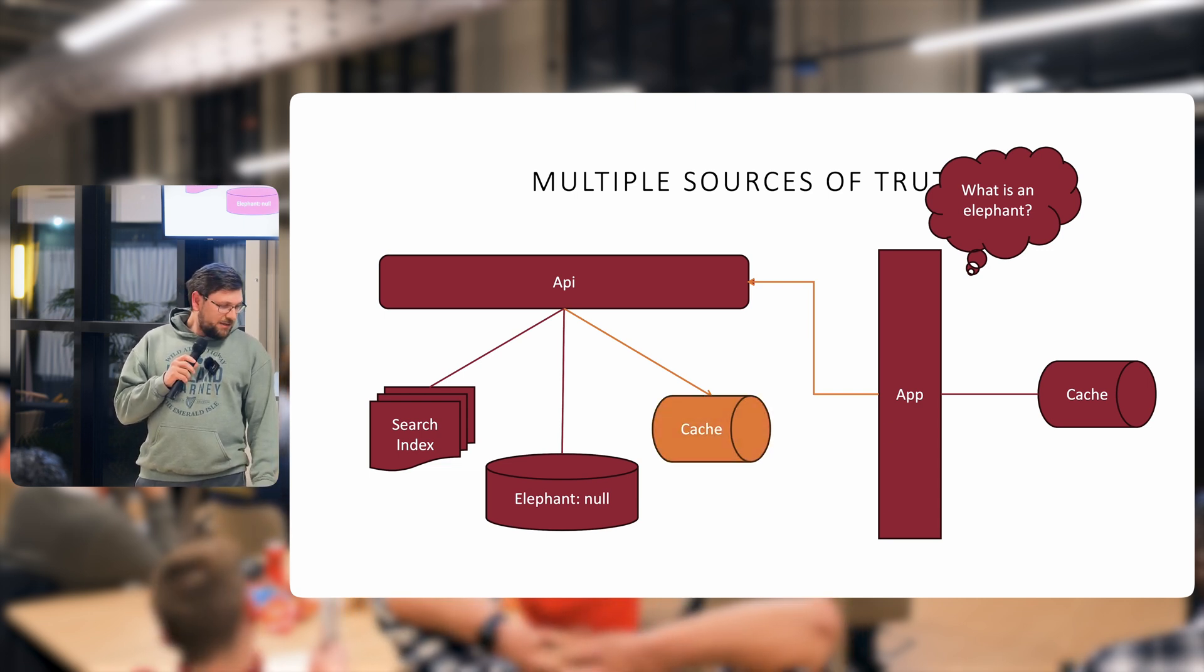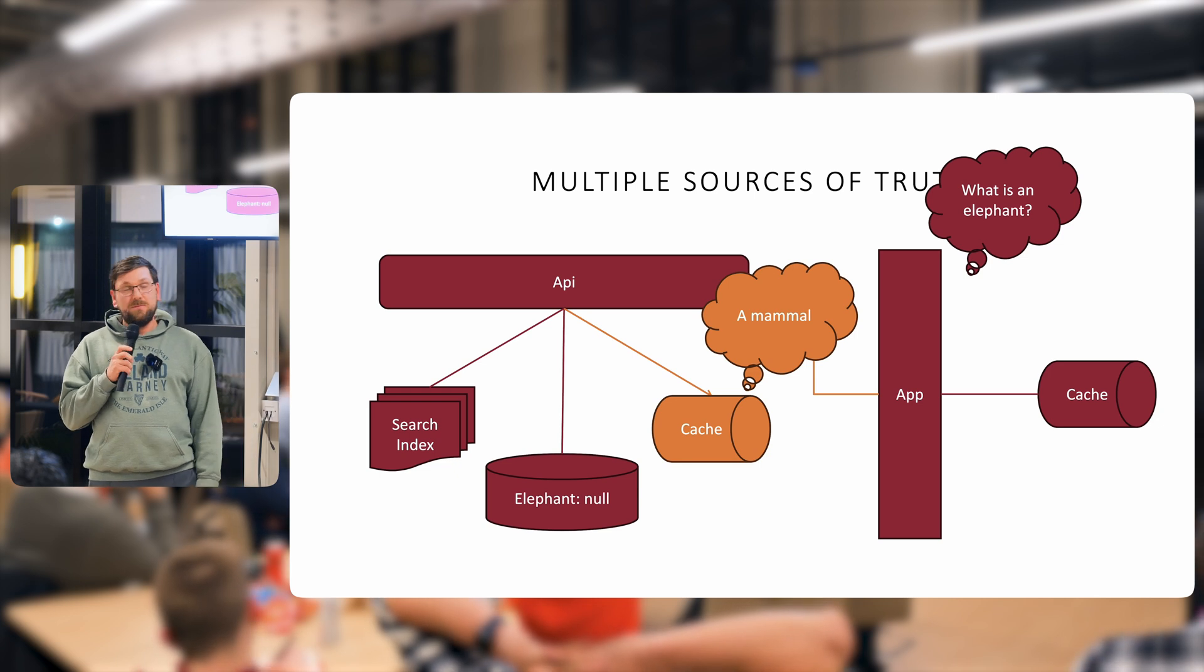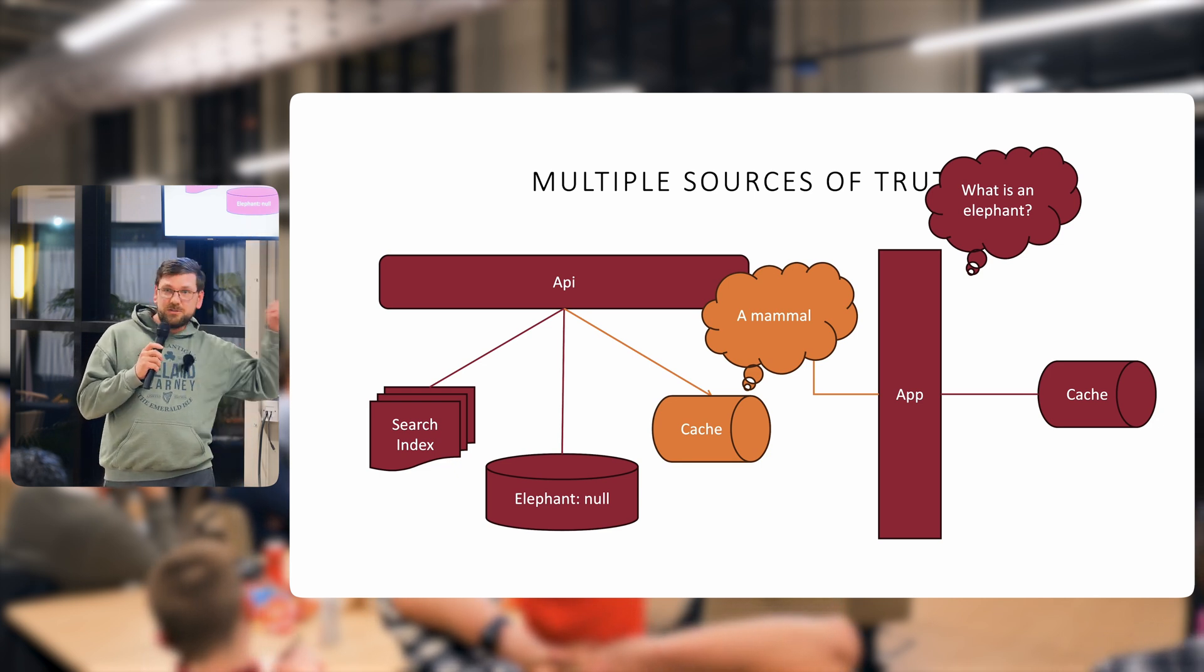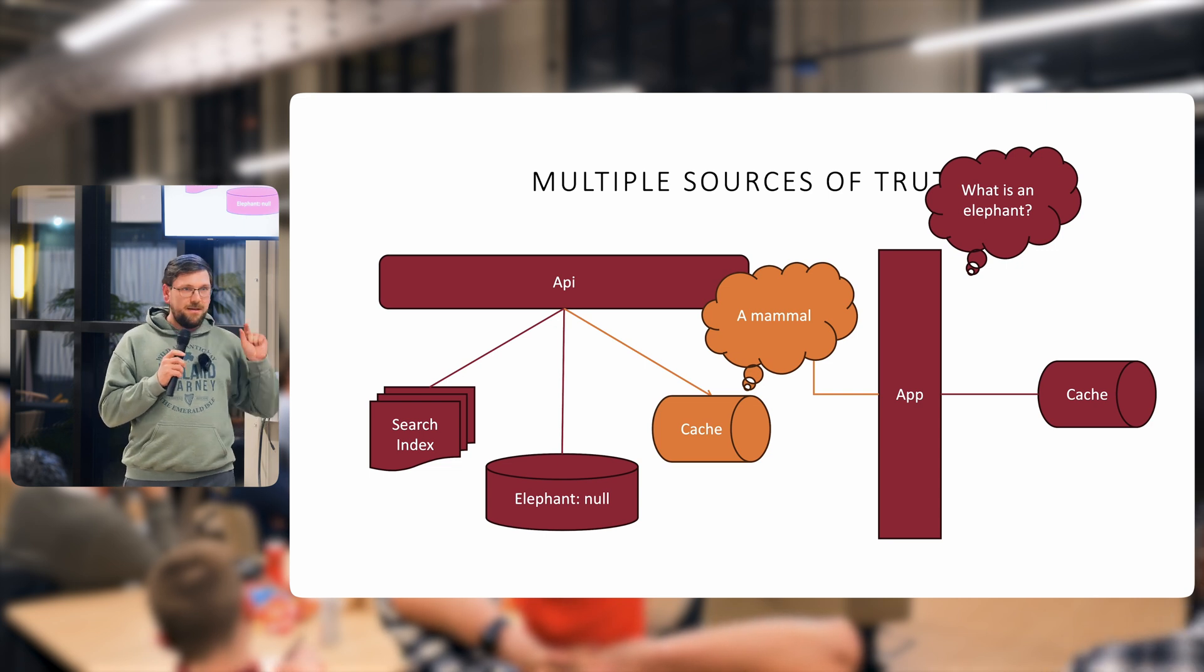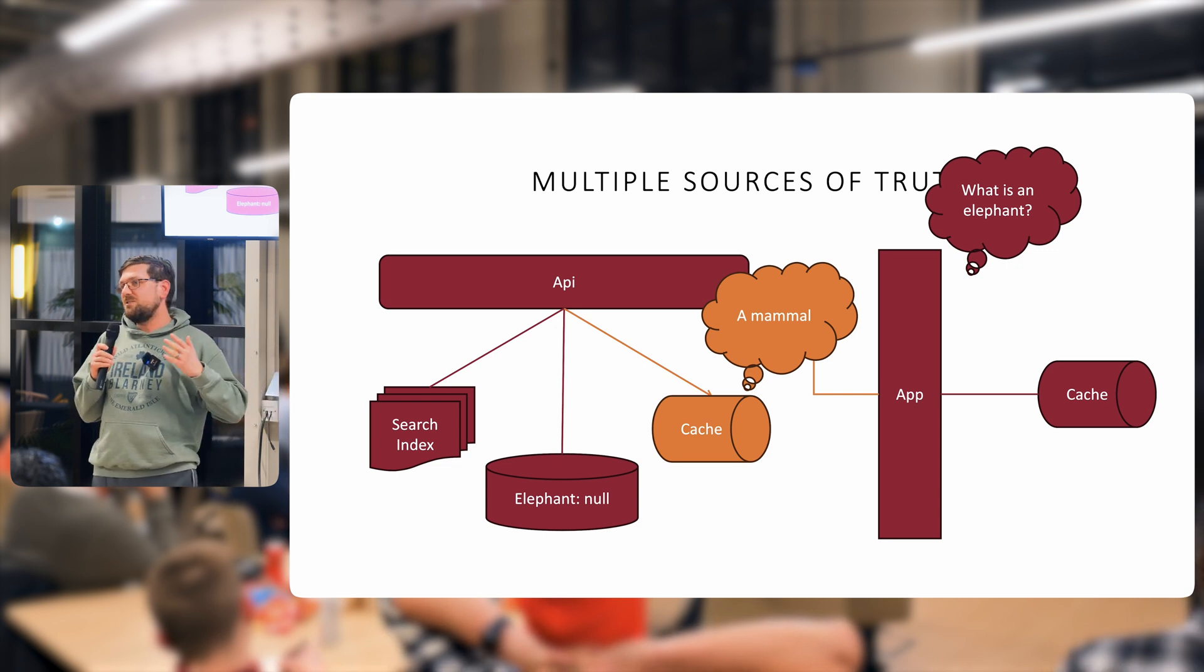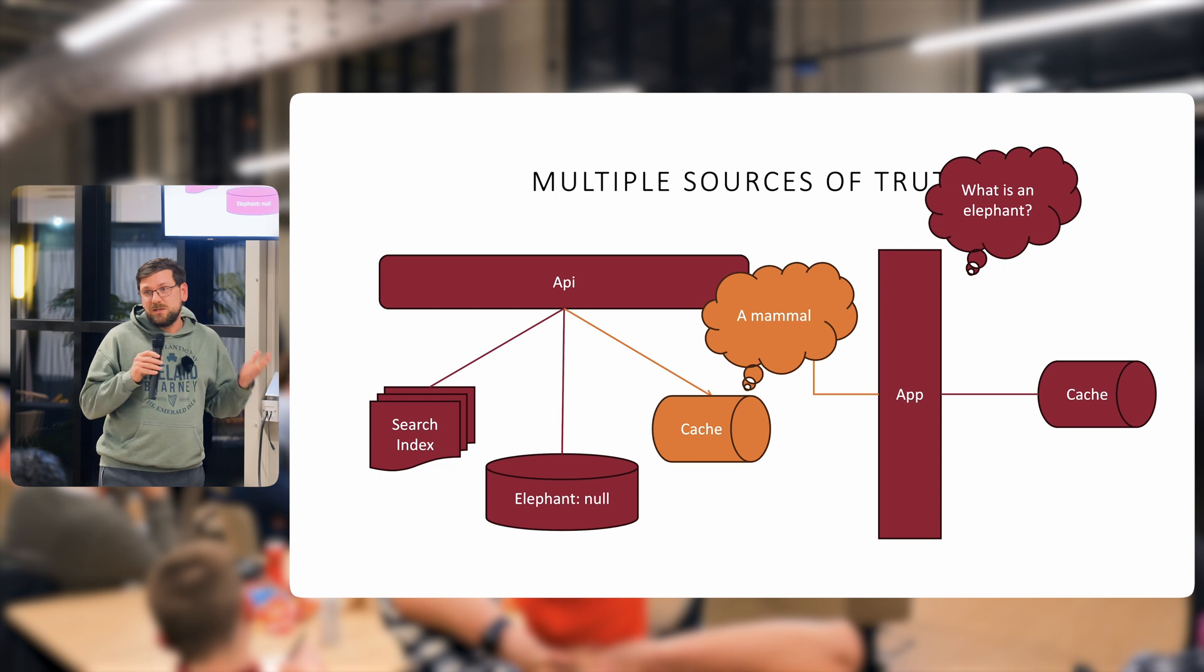And our cache is going to say it's a mammal. Our database is null because that other transaction that is in progress right now has updated the cache and given us a window into our transaction.